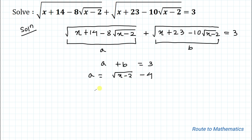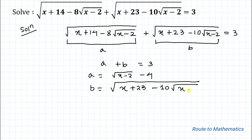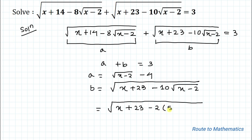Now let's simplify the second term: b = √(x + 23 - 10√(x-2)). Similarly, let's break each term so we can apply the algebraic identity. So x + 23 - 10 can be broken as 2 × 5 × √(x-2).